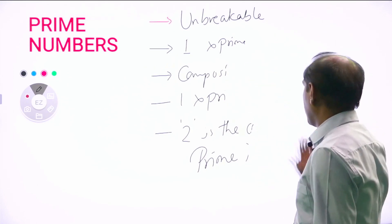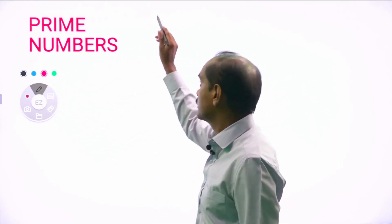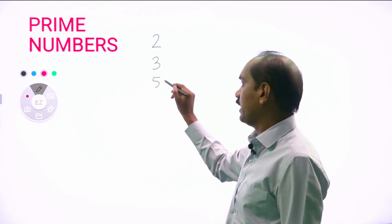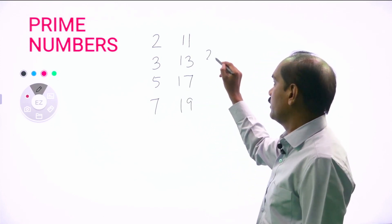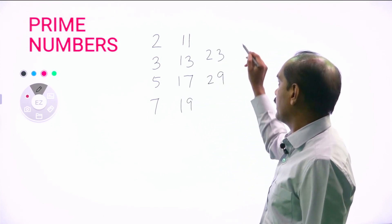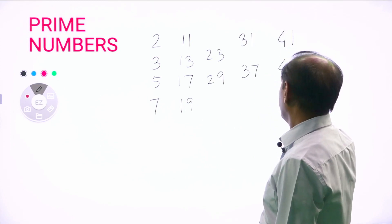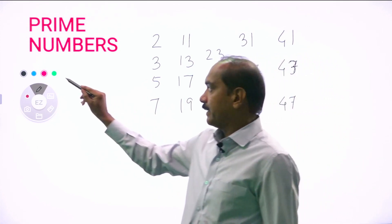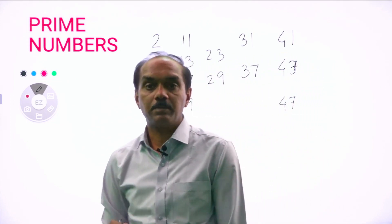Prime natural numbers start with two: 2, 3, 5, 7, 11, 13, 17, 19, 23, 29, 31, 37, 41, 43, 47. These are the prime numbers up to fifty.